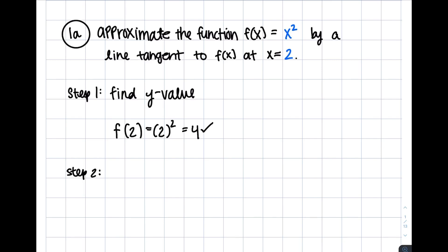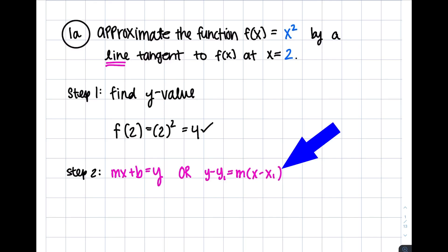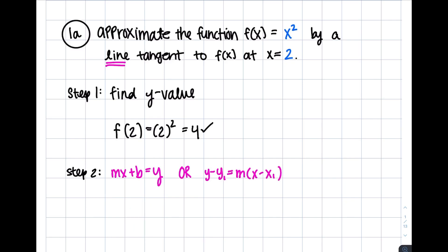Before moving on to step 2, let's review two formulas of a line. We have the typical y equals mx plus b, and we also have y minus y1 equals m times x minus x1. For our purposes, we're going to use the second formula since we don't have a y-intercept needed for the first formula. We already have the x value and now we have the y value, so the only missing piece is m, which is our slope. The tangent line is our derivative, which is the slope at one point.